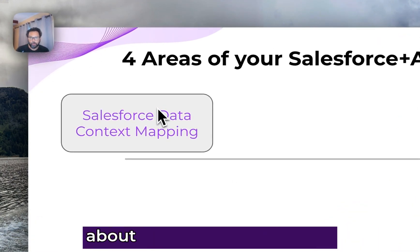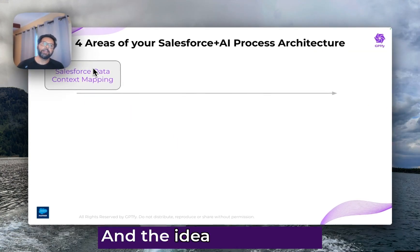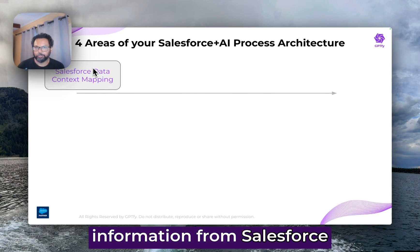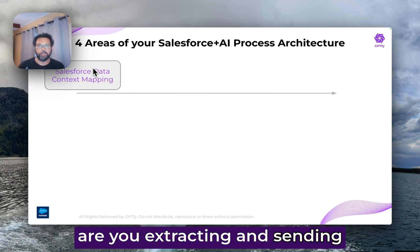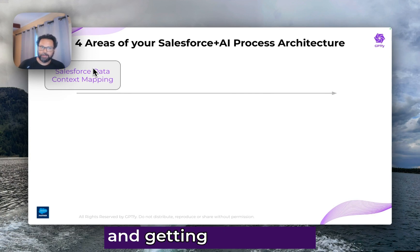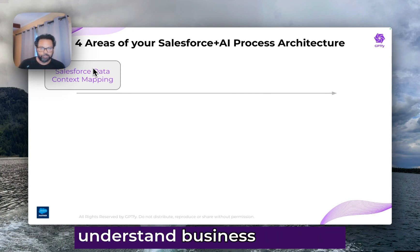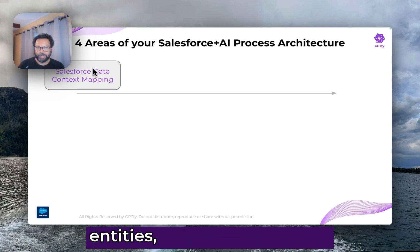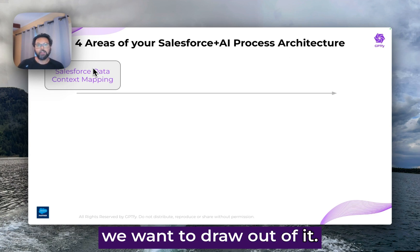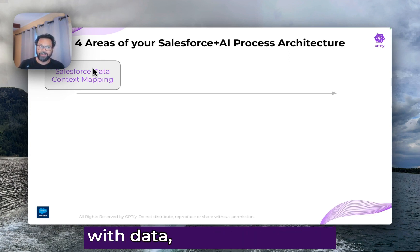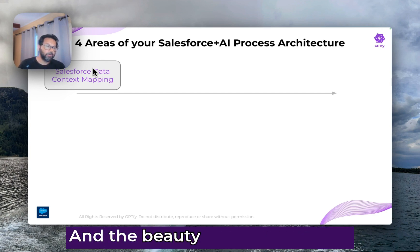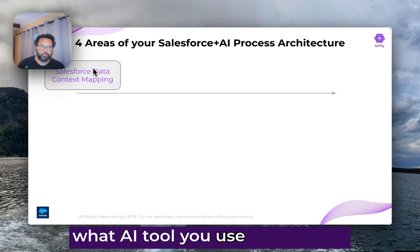The first area is data context mapping. The idea here is: what information from Salesforce are you extracting and sending over to AI for processing? This is the most important area. People in this space need to understand business concepts, business process, business entities — what do they mean, what kind of interpretation you want to draw out of it. If you're a business analyst, someone associated with data, or an admin, this is really important for you. And the beauty of this is that because it's conceptual, it doesn't matter what AI tool you use.